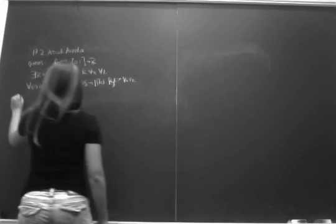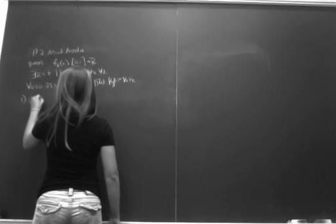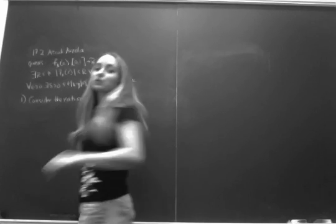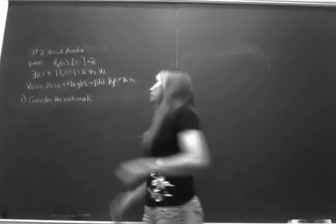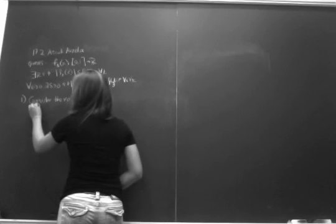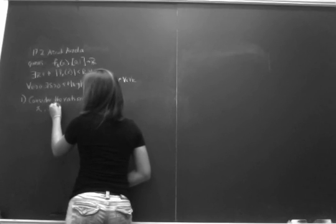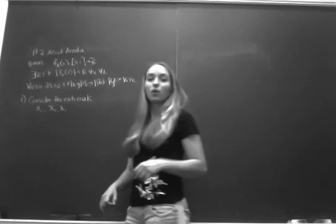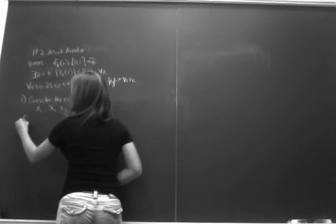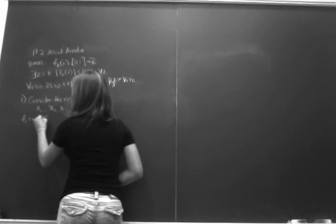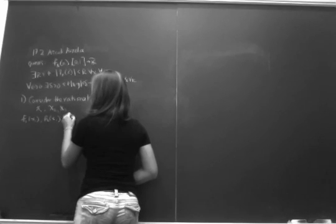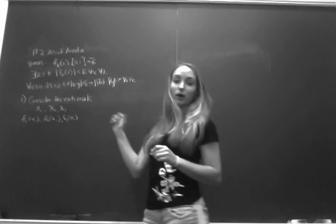The first thing we're going to do is consider the rationals. As we know, the rationals are enumerable, so using any standard consistent method of enumerating rationals, we have rationals x₁, x₂, x₃, etc. What we're going to do is evaluate our sequence of functions on x₁. So we have f₁(x₁), f₂(x₁), f₃(x₁), etc. — all evaluated on x₁.